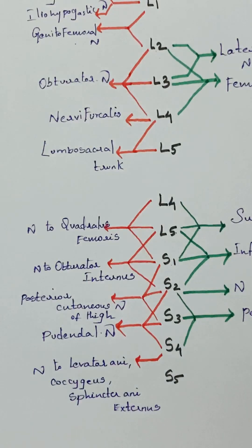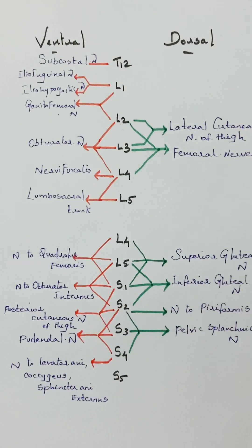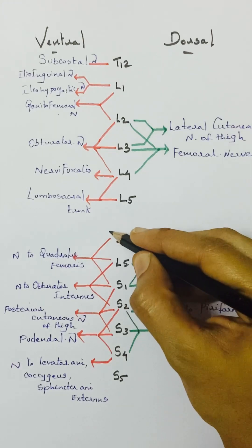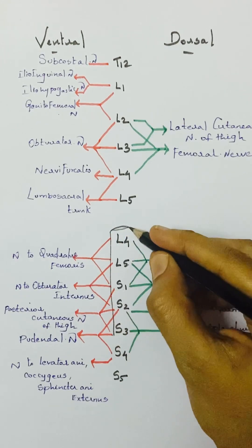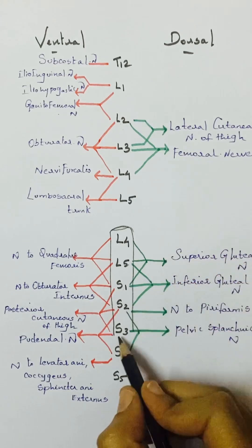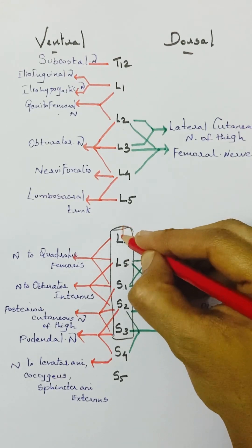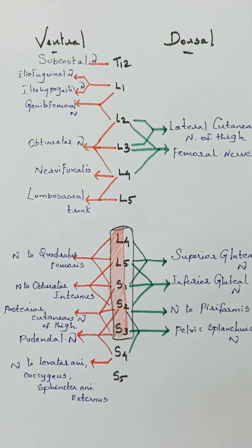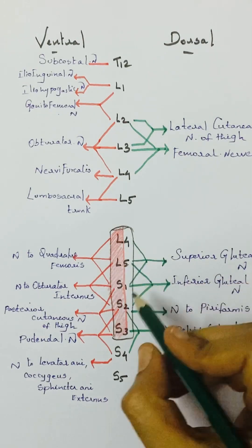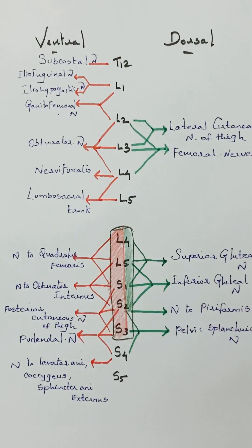The most important nerve in the posterior part of the lower limb is the sciatic nerve — the thickest nerve of the body. Its root value is L4, L5, S1, S2, S3. The sciatic nerve has two components: the tibial component from the ventral rami with root value L4, L5, S1, S2, S3, and the common peroneal component from the dorsal rami with root value L4, L5, S1, S2.